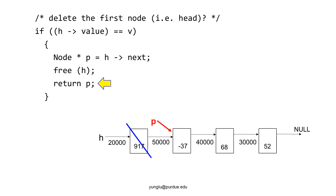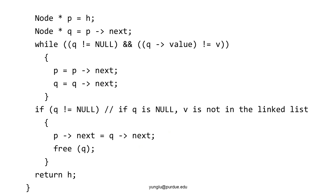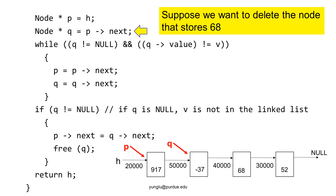Next, we consider the third case, which is more complex. We need two more pointers, p and q. q will be the node to be deleted, and p is the node before q. Suppose we want to delete the node whose value is 68 — the program has to first find that node.